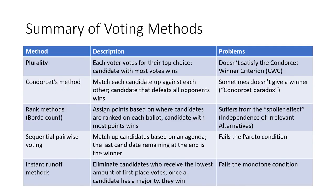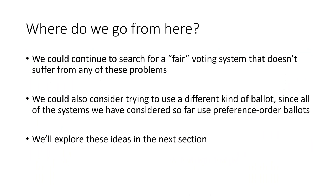To summarize, we've talked about five large categories of voting methods, and each one suffers from some kind of flaw or fails to meet some fairness criteria. From here, we could continue searching for a perfect voting system, or we could consider using a different kind of ballot — since everything so far has used preference list ballots. Those are ideas we'll explore in the next section.